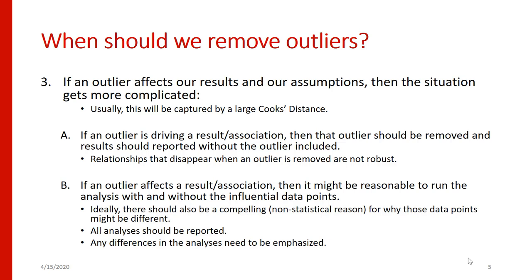As an alternative, if an outlier affects the result or association but doesn't cause it to appear and disappear entirely, it might be reasonable to run the analysis both with and without the influential data points. Ideally, there should be a compelling non-statistical reason for why those data points might be different. But if you do find yourself testing the sensitivity of your analysis by running it two different ways, all analyses should be reported and any differences need to be emphasized.